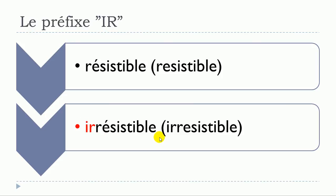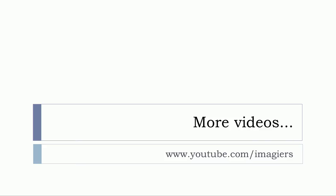The last example is résistible. Using exactly the same way, you add IR at the beginning and résistible becomes irrésistible. And that's it!